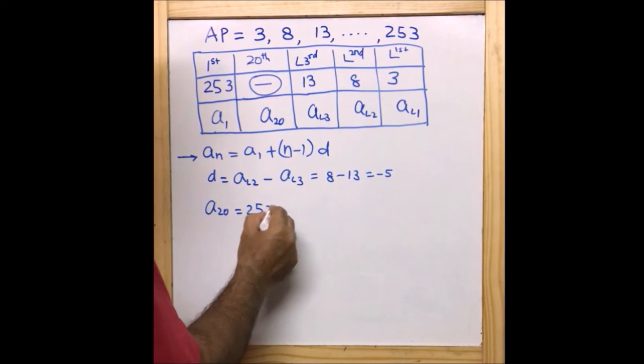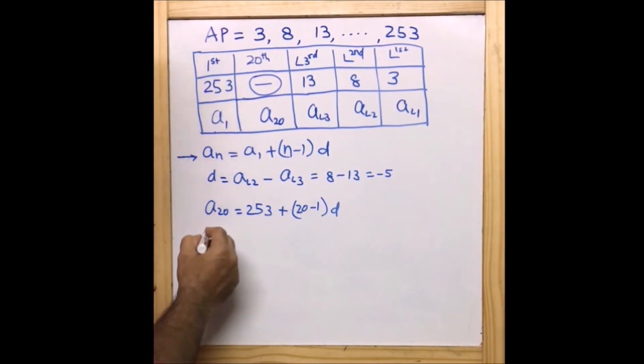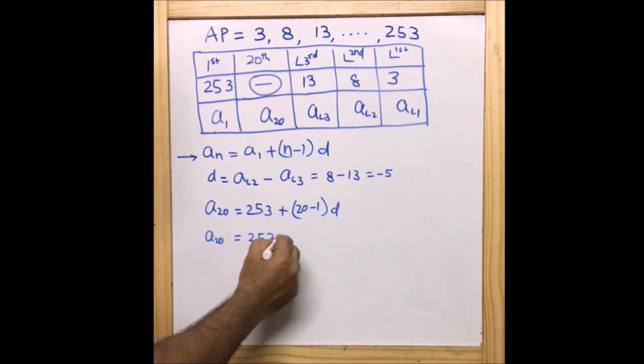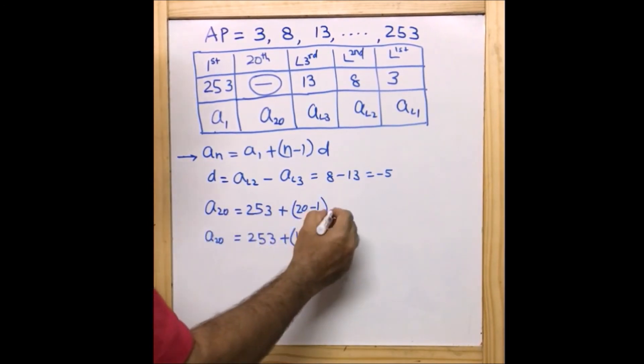So 253 + (n-1), which is (20-1)d. a_20 = 253 + (20-1) is 19, and here I can write d is -5.